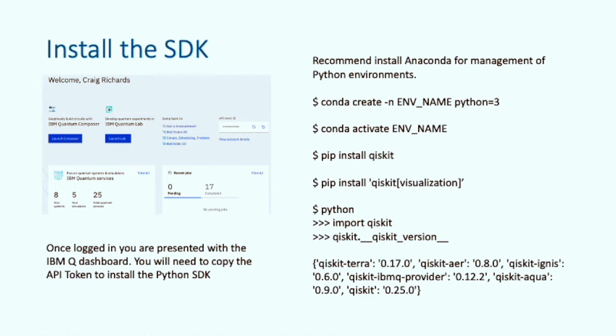Once logged in, you will be at the IBM quantum dashboard. From here you will need to copy an API key that we will require for the next steps. It's installing the Qiskit Python SDK. If you already have Python 3 installed, you can simply run the pip install command to install Qiskit. But I suggest you install Anaconda and set up a separate environment.